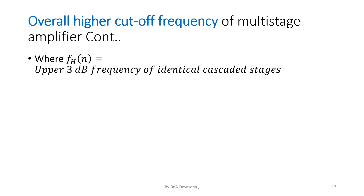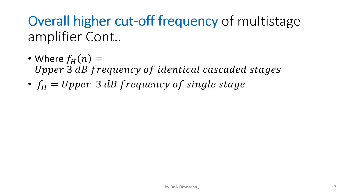FH is the upper 3 dB frequency of single stage and N is the number of cascaded stages.